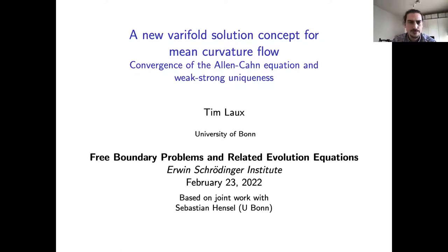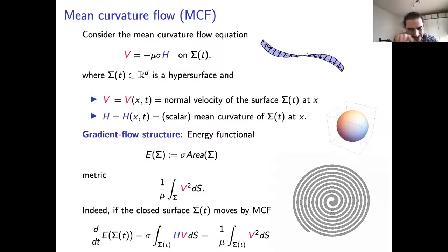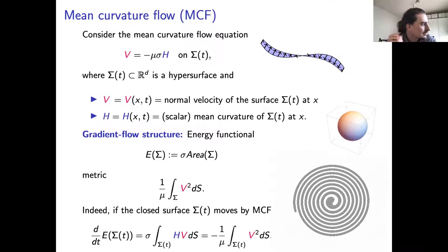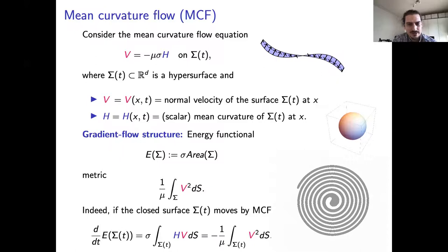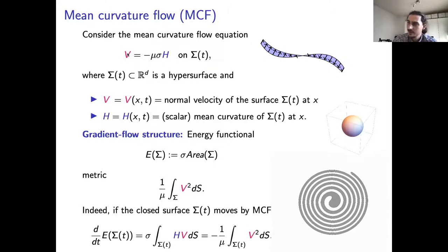Let me first say what mean curvature flow is. There are two animated videos: one is a very slowly shrinking sphere, and the other is in 2D. In 2D, things are very well understood — two-phase mean curvature flow in 2D becomes convex in finite time, no matter how complicated the initial conditions.